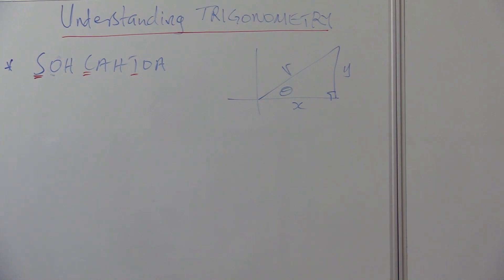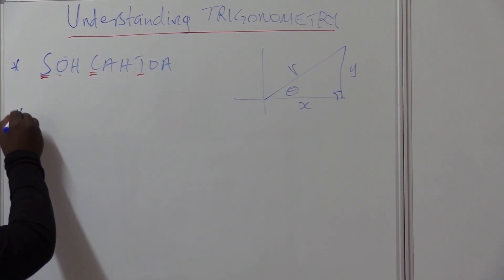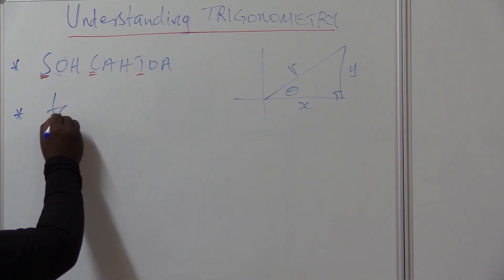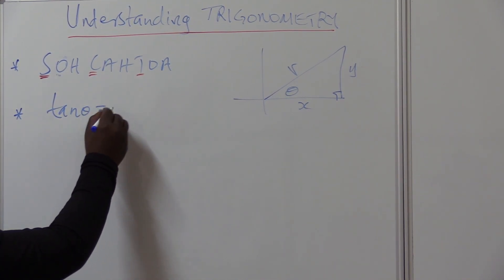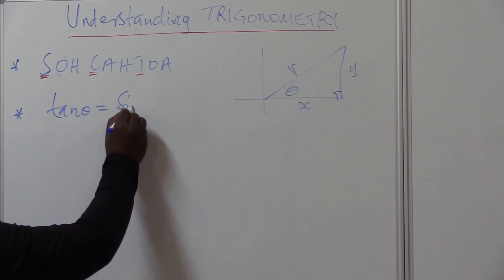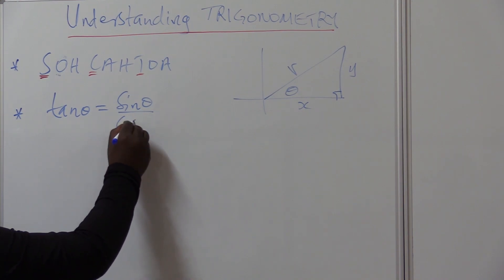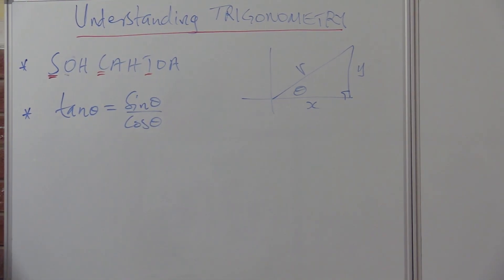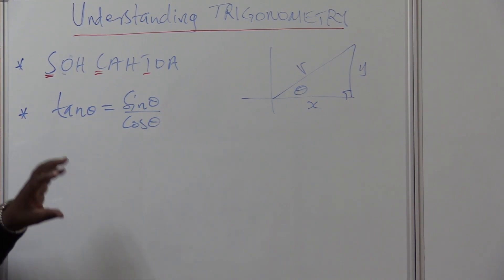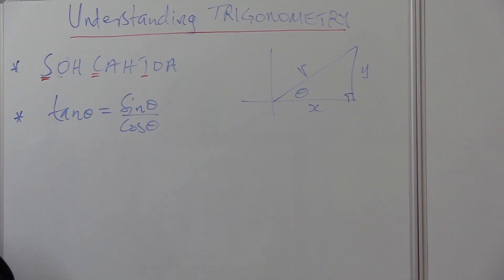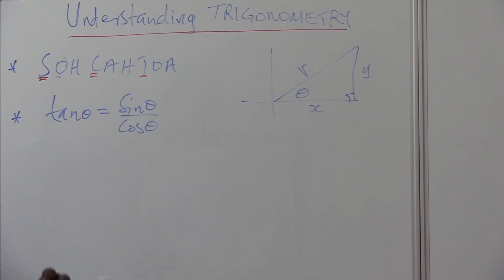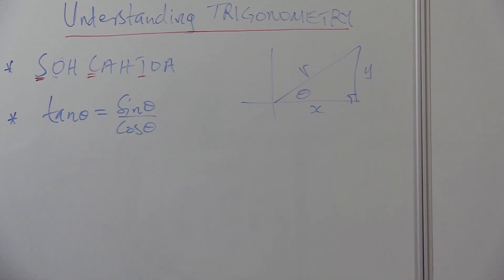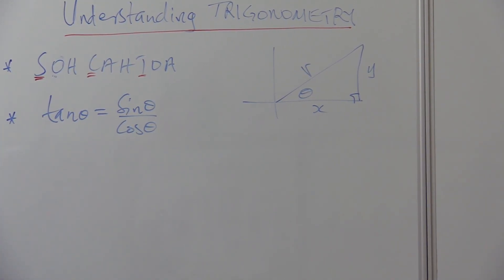An important identity: whenever we say tan theta, we can refer to it as sine theta over cos theta. It is advisable that when you work on trigonometry, whenever you see tan, change it into sine and cos. It is advisable that you work with sine and cosine.